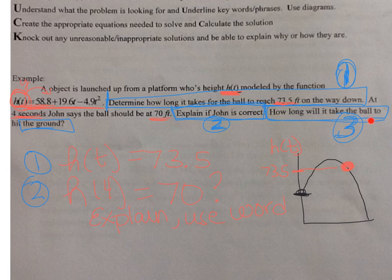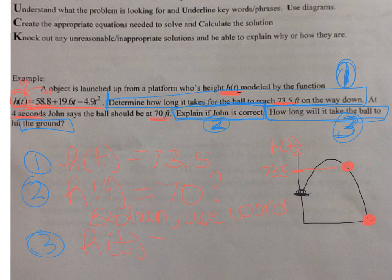The last question: how long will it take for the ball to hit the ground? I want to know when the ball comes back down and hits the ground. If it's hitting the ground, that means my height is equal to zero, so we need to find when h(t) = 0. We're going to work on breaking down the problem tomorrow in class, and then the next day we'll actually solve everything. It's really important that we know how to break down the problem first. Have a good night.